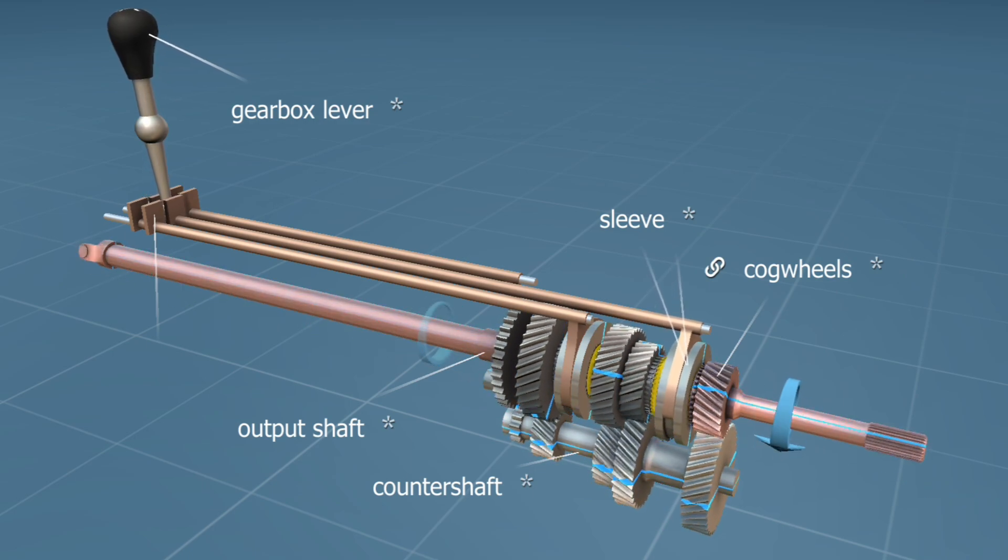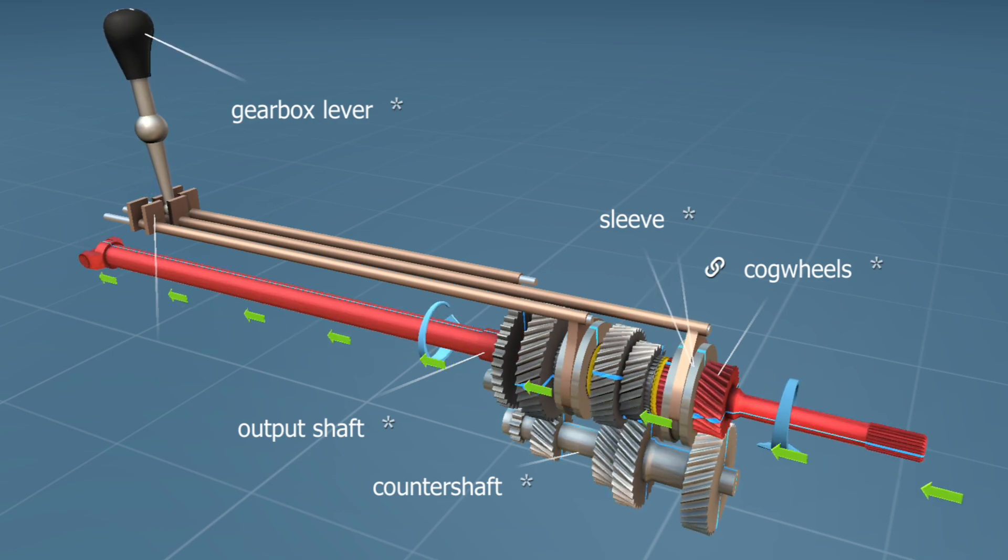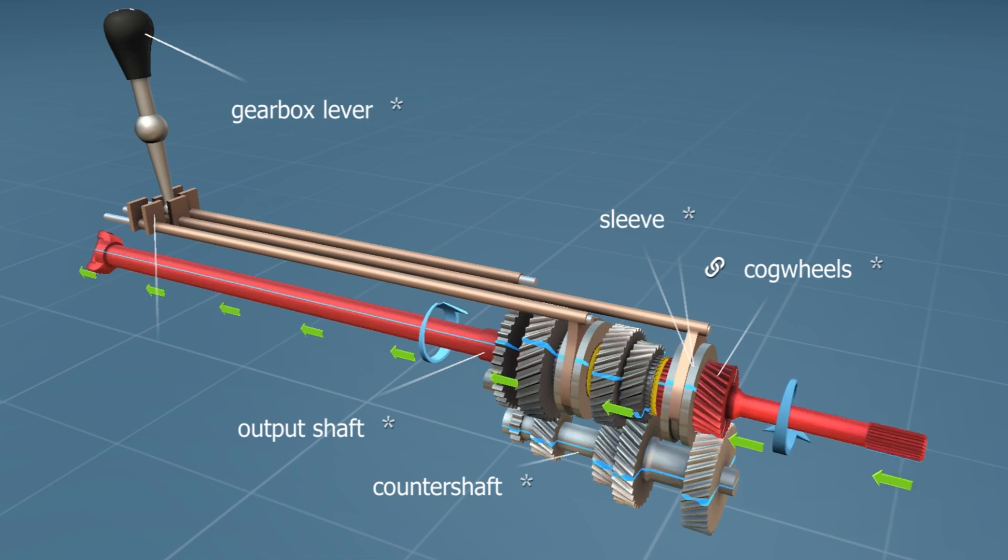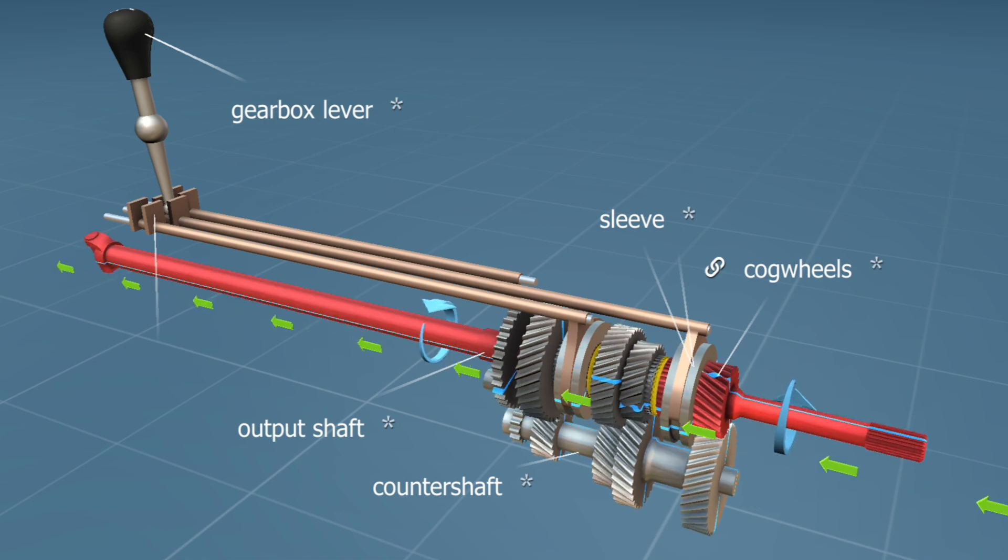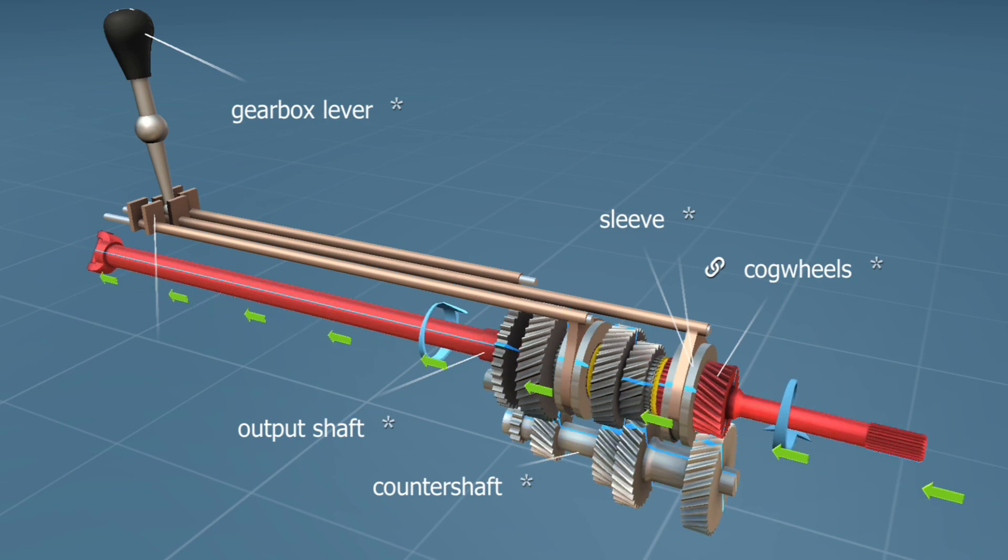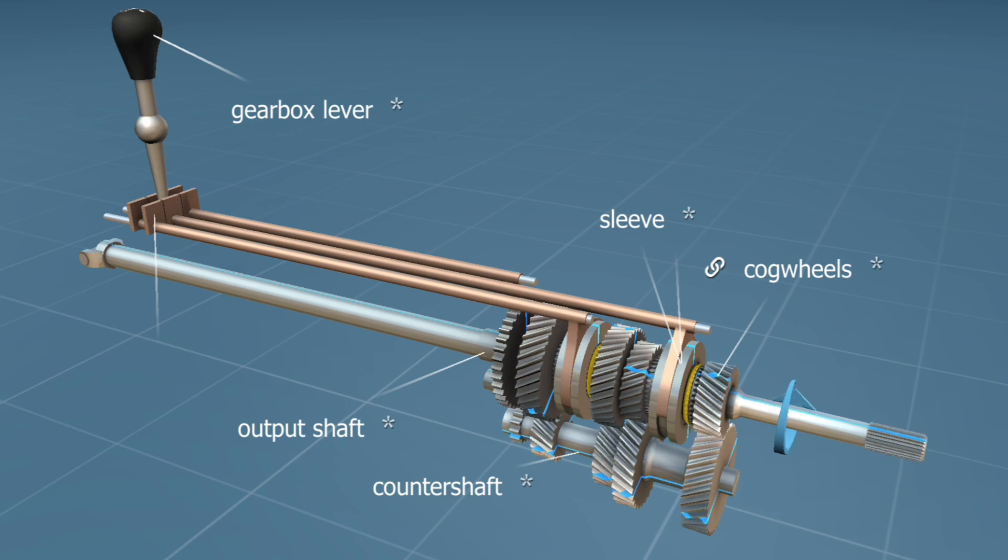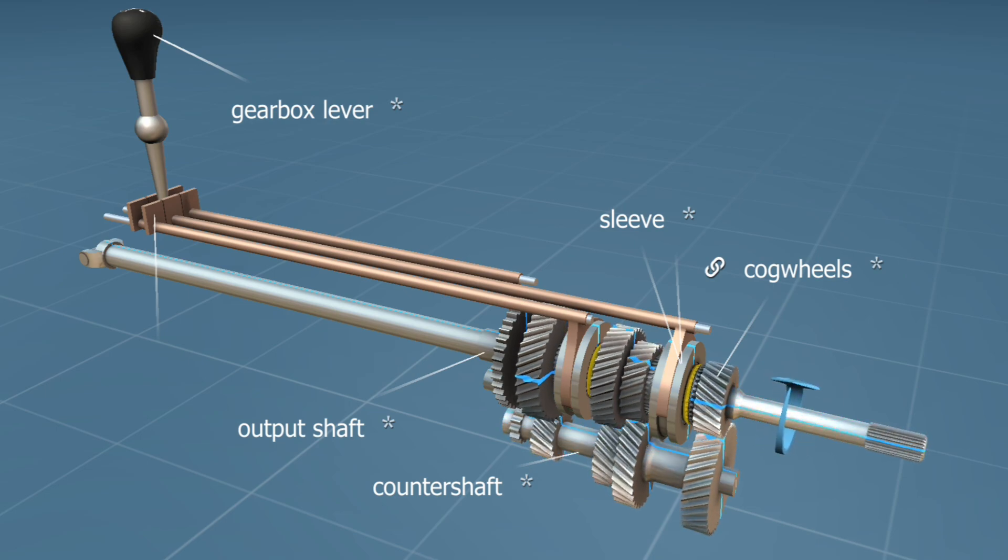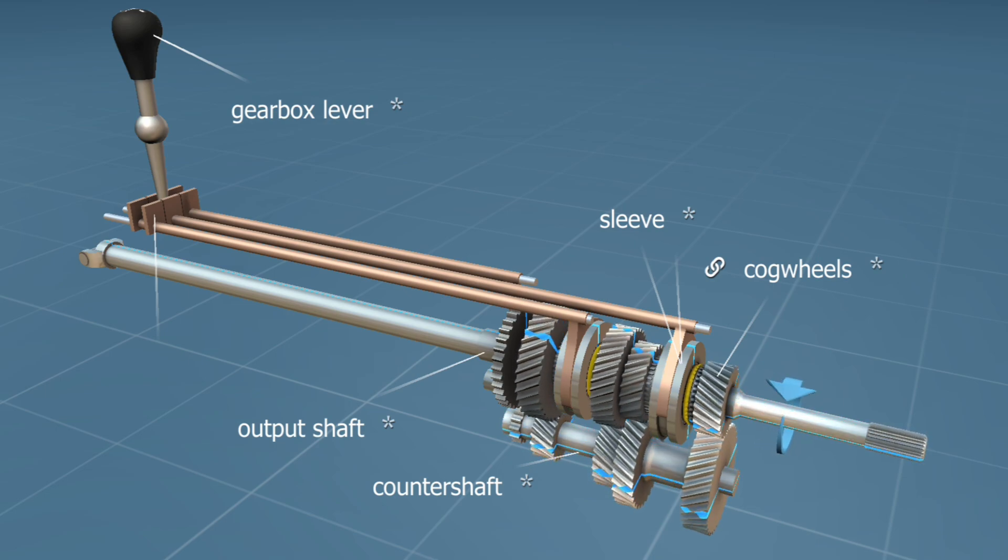In fourth gear, the speed increases further by lowering torque. In this case, drive goes directly through the input and output shafts. No gears are involved in the transmission. The RPM of the engine's crankshaft equals that of the output shaft, hence the name direct drive.